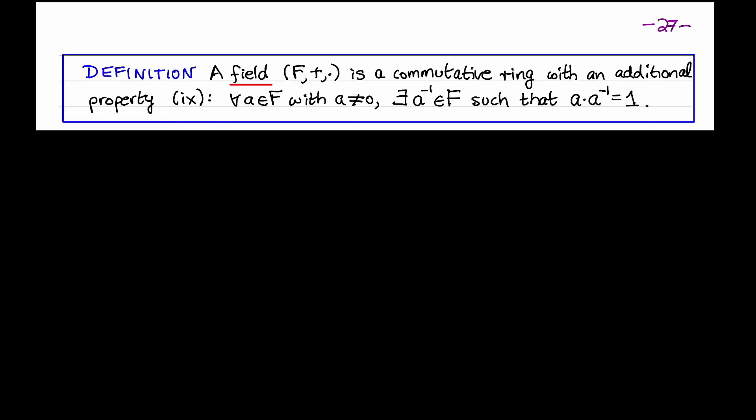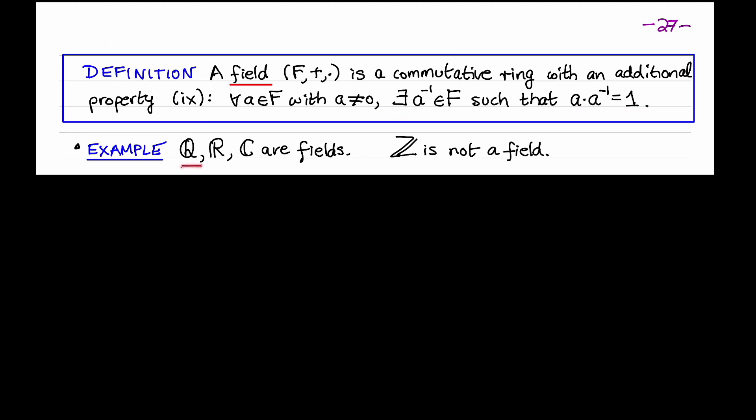A field is a commutative ring with the additional property that all nonzero elements in the field have multiplicative inverses. By that I mean that for every nonzero element in the field, there exists an element in the field that I'll call A inverse, such that A times A inverse is the multiplicative identity. For example, the rational numbers, the real numbers, and the complex numbers are fields. But note that the commutative ring of integers is not a field, because not all nonzero integers have multiplicative inverses. For example, the inverse of the integer two is the rational number one half, but one half is not an integer, so two inverse doesn't exist in the set of integers, which is why the set of integers is not a field.